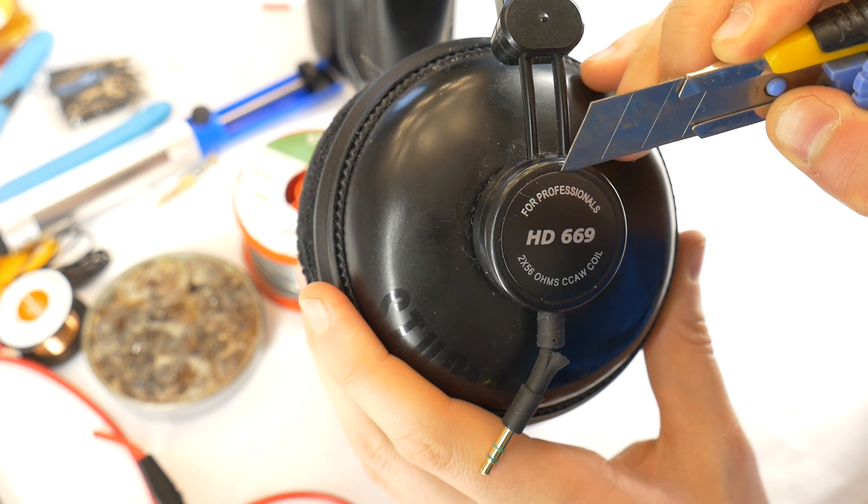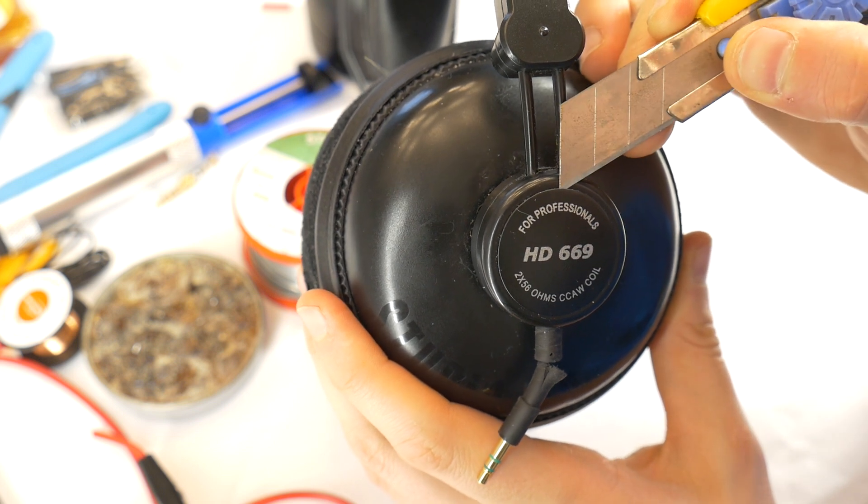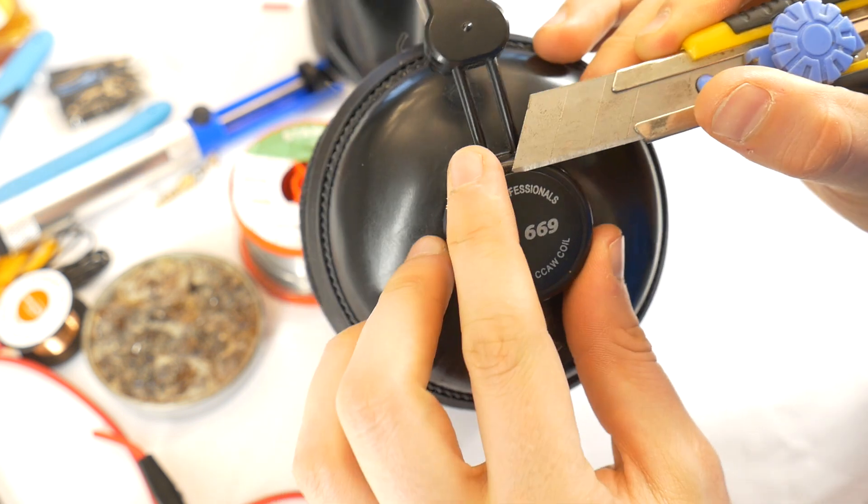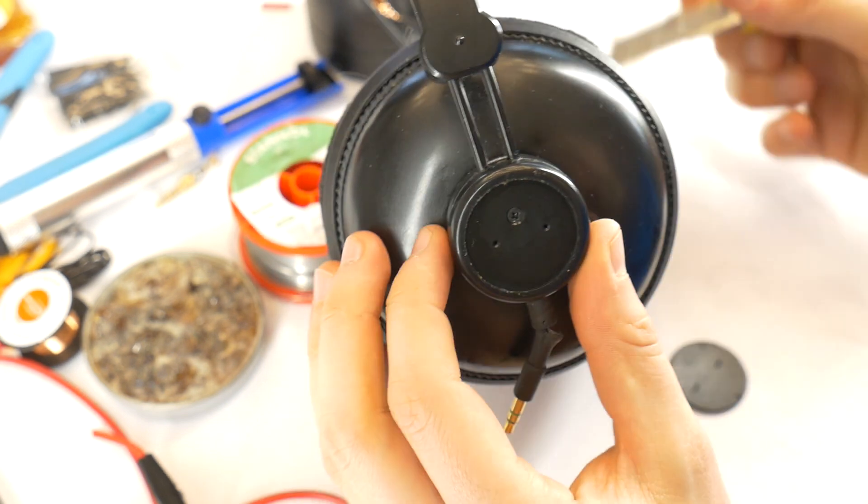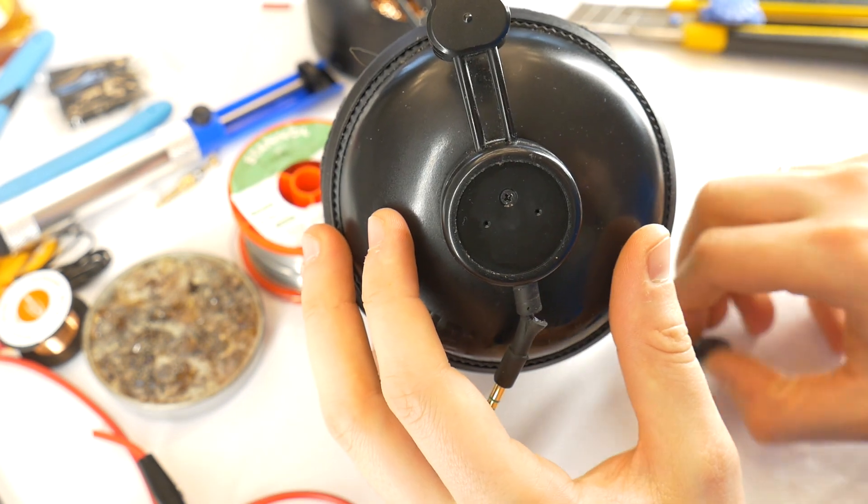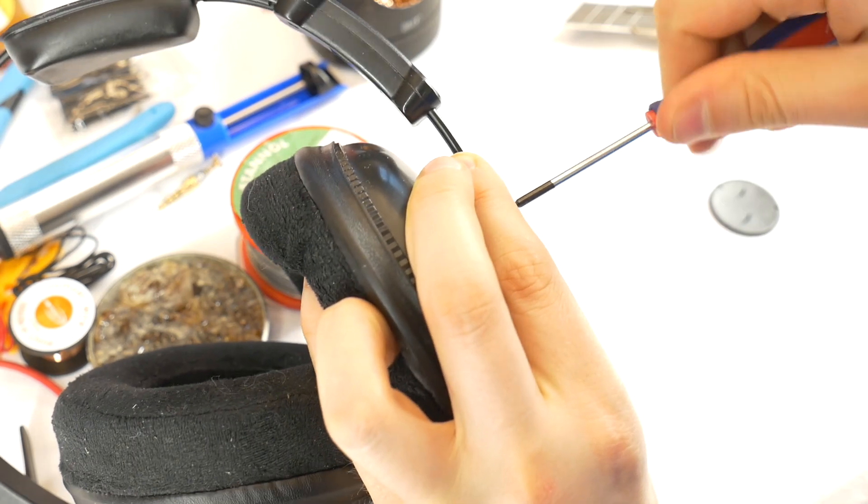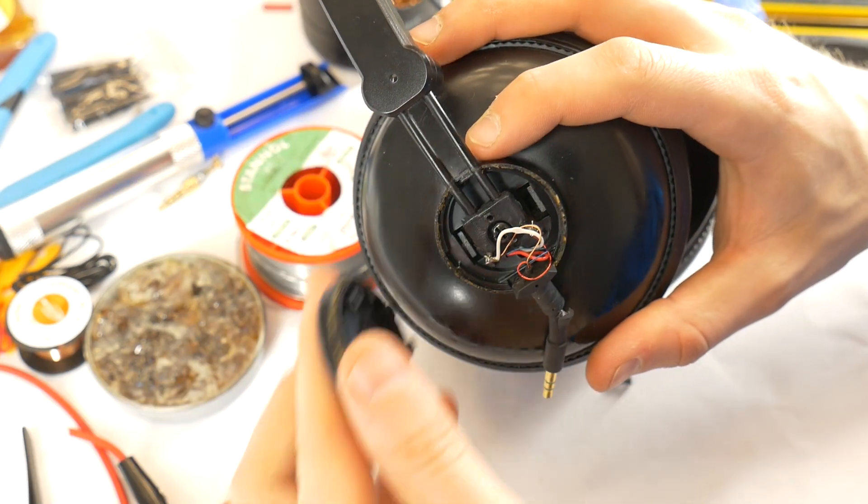The first task when you want to make a detachable cable mod is to open the headphone housing where the cable connects. In this case the screw is hidden under the decorative cover. Unscrew this screw. Here are all the wires.